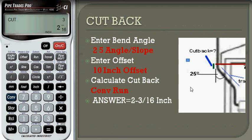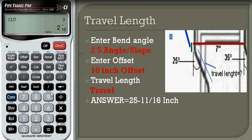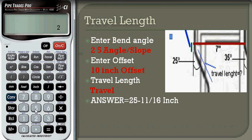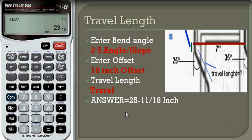Next, find the travel length for the offset having a 25-degree bend angle. First, clear by pressing CO and V. Then enter 25 and press angle or slope to store the value. Enter 10, press inch, and press offset to store this value. Then press travel to find the travel length. The answer is 25 and 11/16 inches.